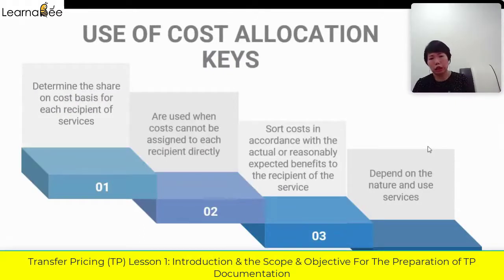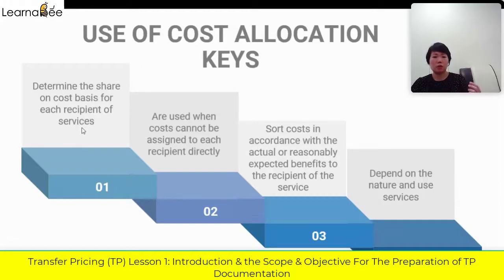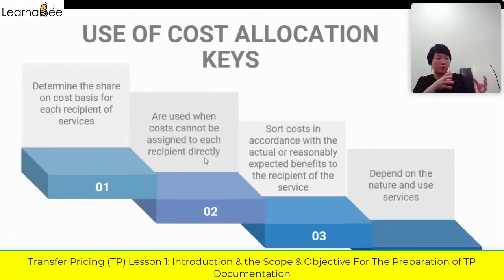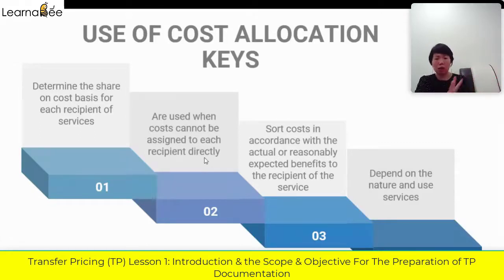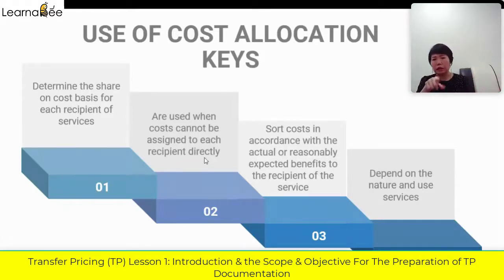An allocation key is used to determine the share on a cost basis for each recipient of services, and is used when cost cannot be assigned to each recipient directly. Some costs are commonly shared. If it's a direct cost only being consumed by one party, I can straight away allocate it. But a lot of situations are complicated because everything is shared, and I cannot directly allocate — that's why I need to have an allocation key.